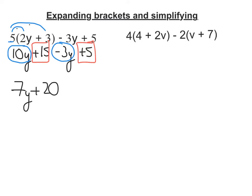Into the second question. This 4 here is going to multiply that 4 and that 2v, just things inside that bracket. And this negative 2 is going to times the v and the 7. So what am I left with? 4 times 4 is 16. 4 multiplied by 2v is 8v. That's my first one.